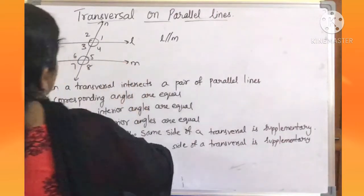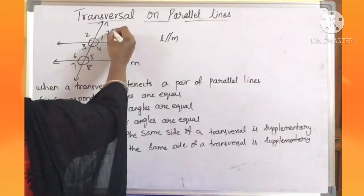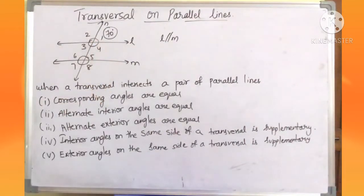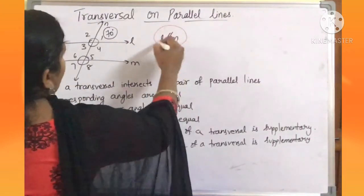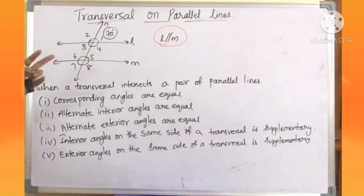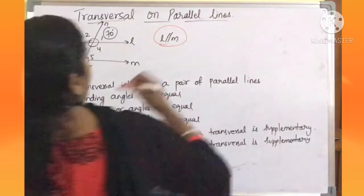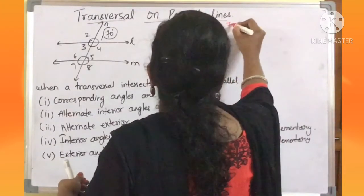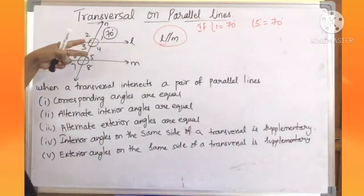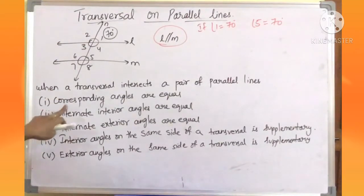For example, they will give a sum like this: angle 1 is 70 degrees — so what is angle 5? They have already given L is parallel to M. If the lines are parallel and a transversal intersects them, we can apply these properties. Simply we can say angle 5 is also 70, because angles 1 and 5 are corresponding angles, and corresponding angles are equal.